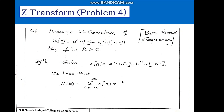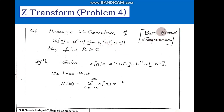The question is: determine the Z-transform of x(n) equal to a raised to n u(n) minus b raised to n u of minus n minus 1. Because of u(n) this becomes a right-hand side sequence, and because of u of minus n minus 1 this becomes a left-hand side sequence. That is why we call it a both-sided sequence, and we also need to find out the ROC for this.